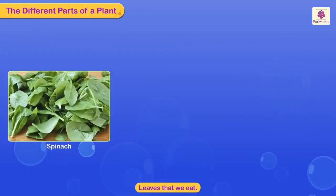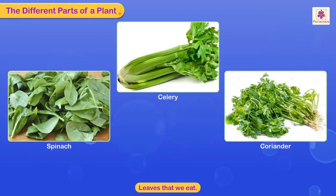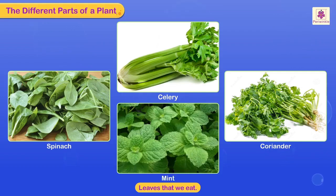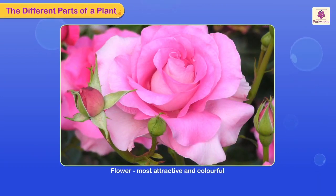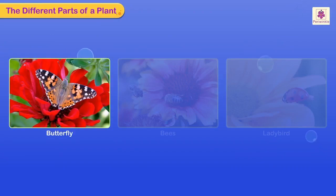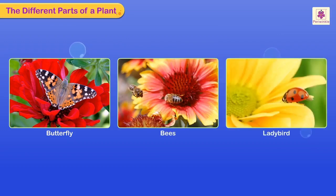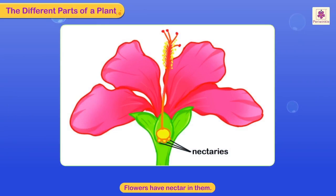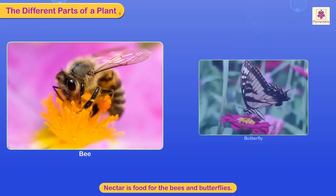Spinach, celery, coriander, and mint are some leaves that we eat. A flower is the most attractive and colorful part of a plant. We often see butterflies, bees, and other insects visiting flowers. They are attracted by the bright colors and the pleasant scent of the flower. Flowers have nectar in them, which is food for the bees and butterflies.